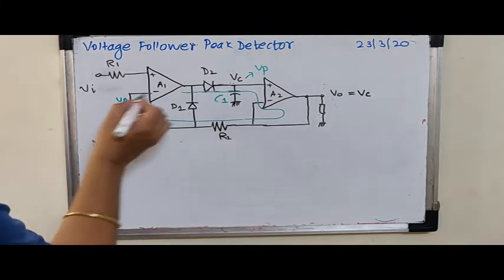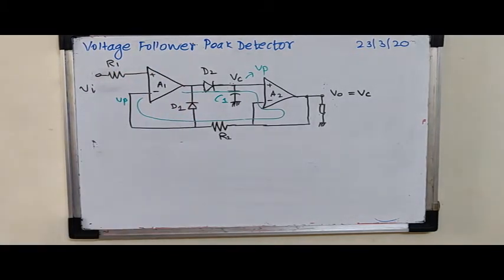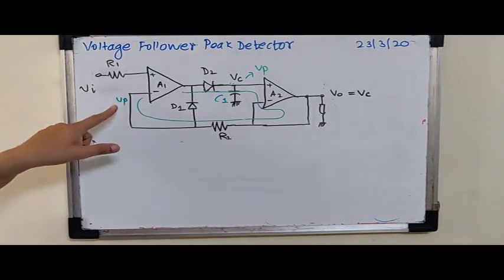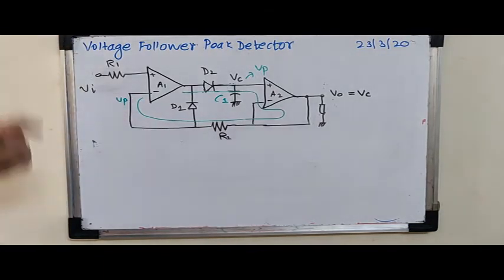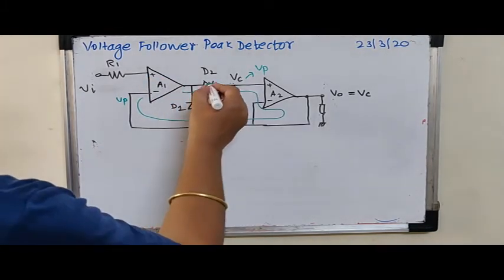Whatever is the voltage Vp remains over here. Now Vi is less than Vp. So in that case, A1 becomes negative. A1 becomes negative. Why does A1 become negative? Because Vi now is going less than Vp, or the inverting terminal of A1 is now at a higher potential than the non-inverting terminal. Output of A1 goes negative, which reverse biases this D2.